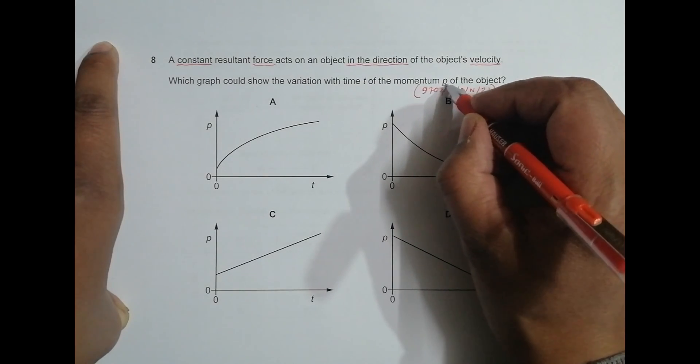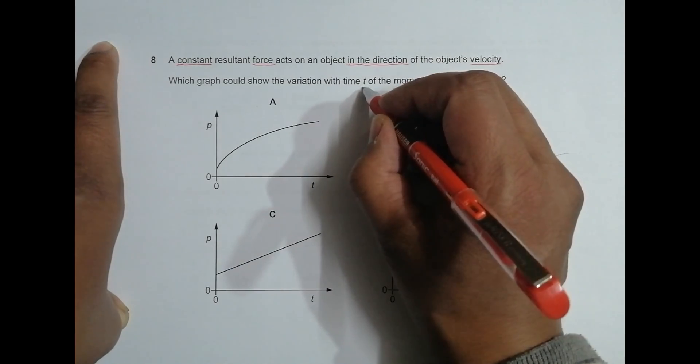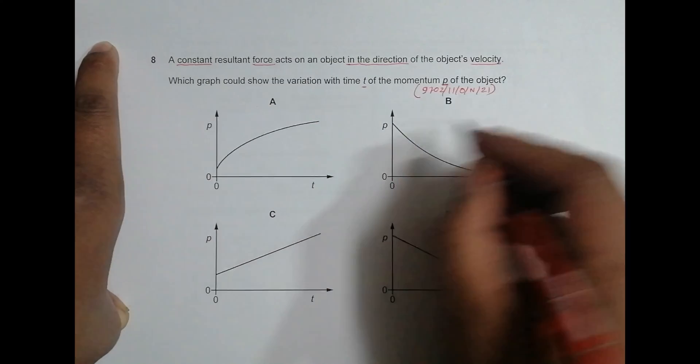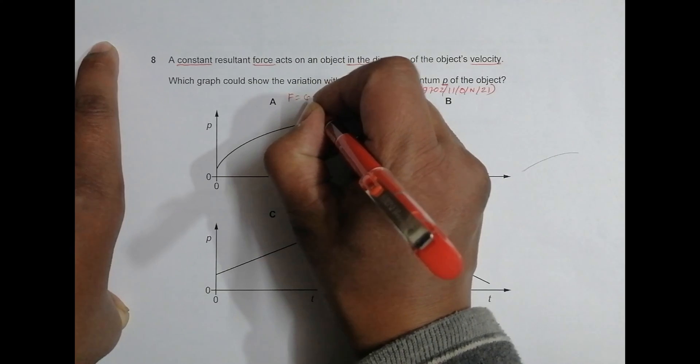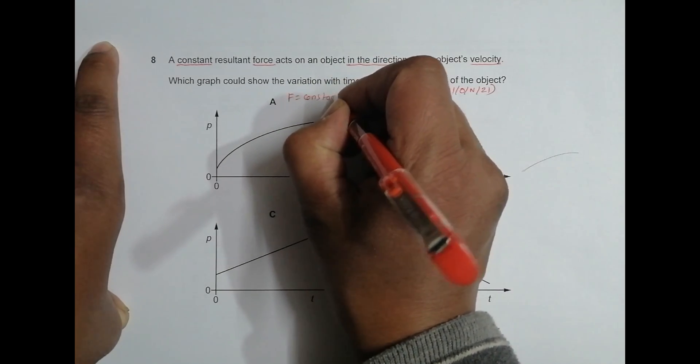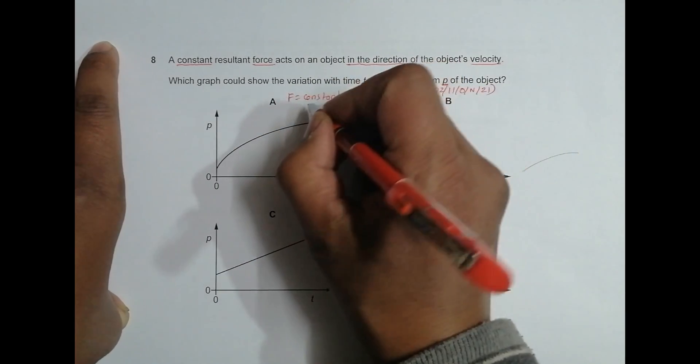The first thing that we have to say is F equal to constant. So I can write somewhere here F is equal to constant. And we also know that this F is equal to...